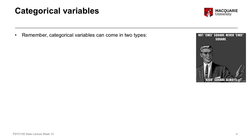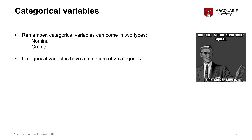Categorical variables can come in two different types: nominal variables and ordinal variables. Nominal variables are unordered categories — arbitrary categories like gender, colour, degree, or department. Ordinal variables still have groups and categories, but there is an order or hierarchy to them, such as low, medium, high, or undergraduate versus postgraduate degrees. Categorical variables can have a minimum of two categories, but there is no maximum number of categories.